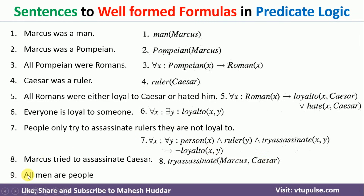Coming back to the last one: 'All men are people.' Rather than taking people, you can take person(X). Since 'all' is there, we take for all X. If X is a man then X is a person, so we write: ∀X: man(X) → person(X). This is how we can convert facts or sentences into well-formed formulas in predicate logic.